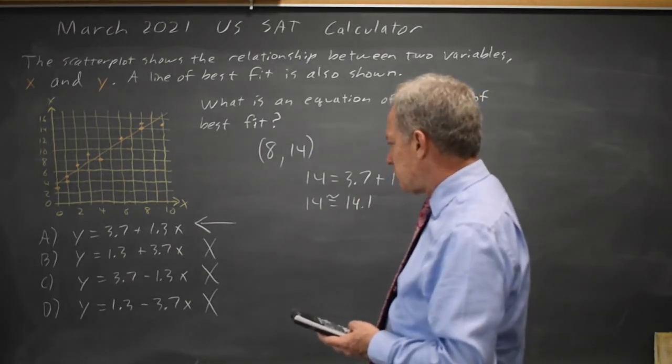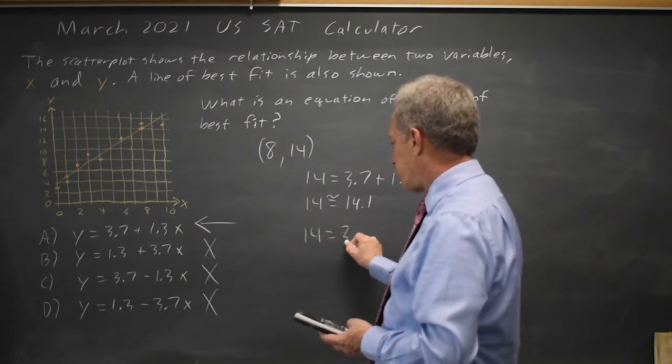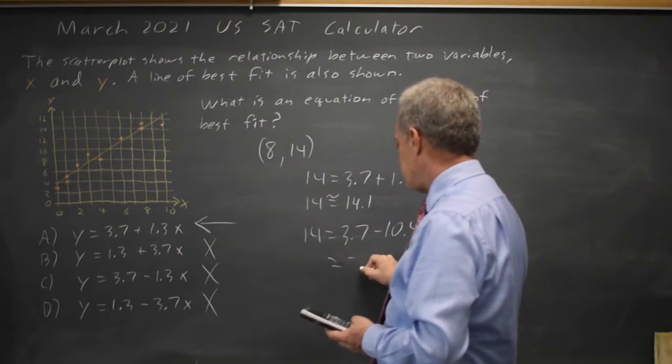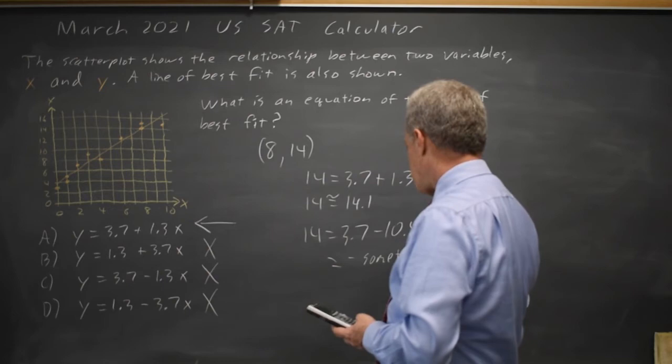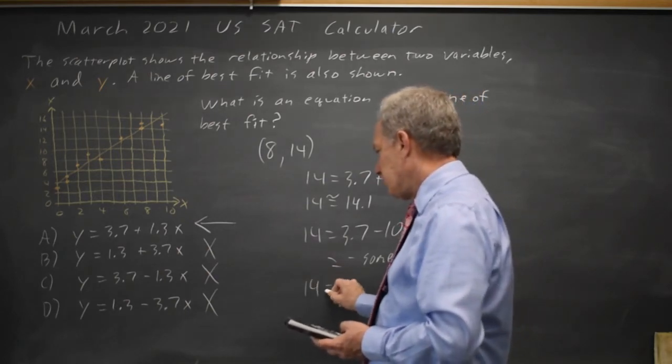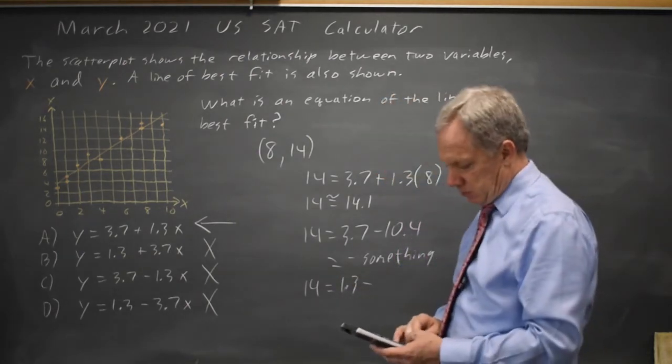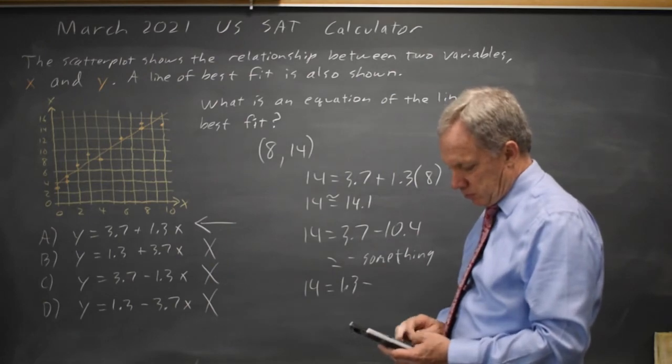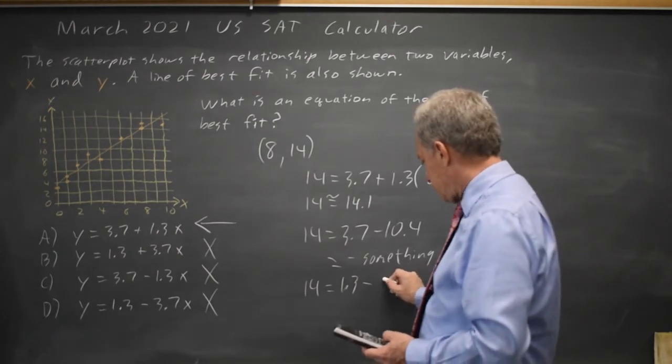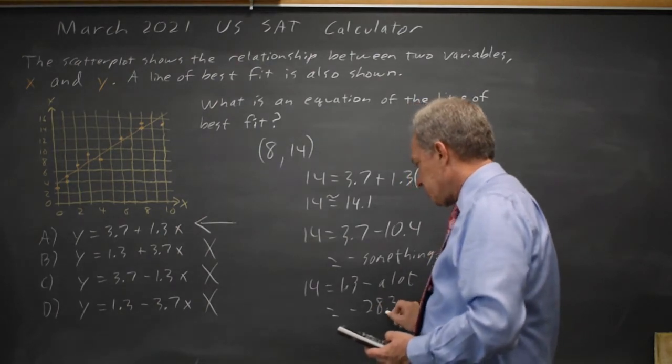If I tried choice C, that would be my y-value of 14 equals 3.7 minus 10.4, and of course that's negative something, which cannot be correct. Similarly, choice D would be 14 equals 1.3 minus 3.7 times 8, which is negative 28.3, which is certainly not 14.